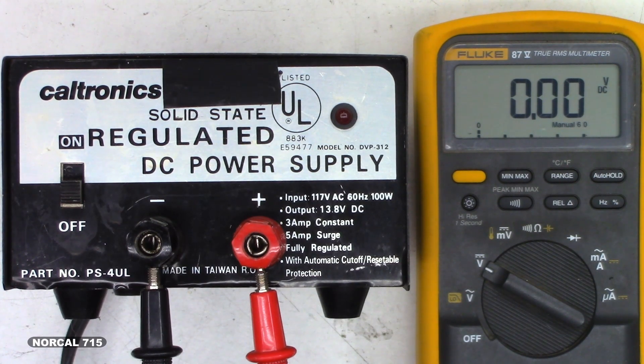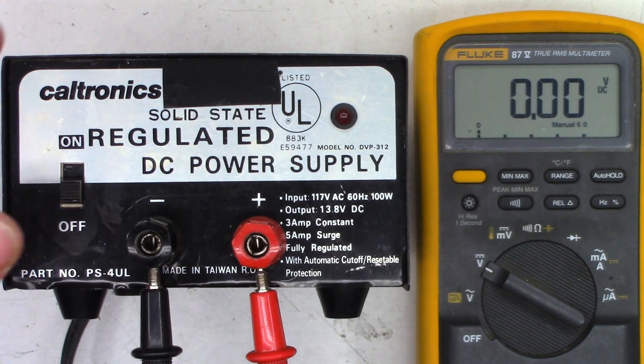It's a 12 volt output, well 13.8, with three amp constant and five amp surge capability, fully regulated with automatic cutoff and resettable protection. Just turn it off, turn it back on. And according to this is a model PS4UL, but it says it's a model DVP312 at the same time. So let's see what this one's doing.